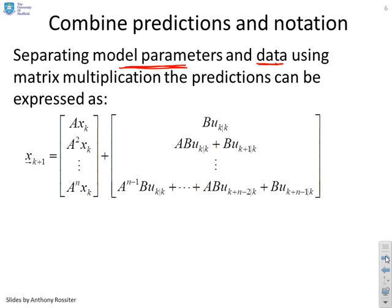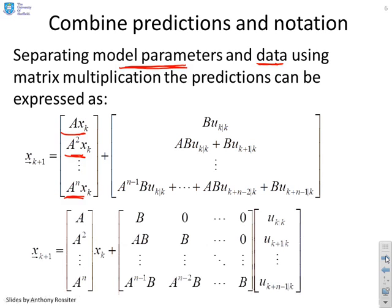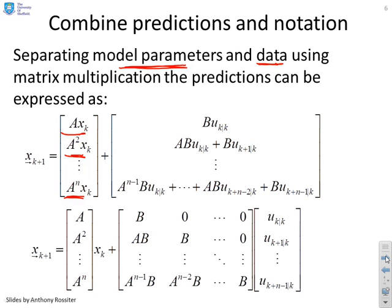So this is relatively straightforward. If you look at this expression here, you can see very quickly how I can separate out the xk. So that's what I'm going to do here. You'll see I can write a matrix, A, A squared, all the way down to A^n, multiplying xk.